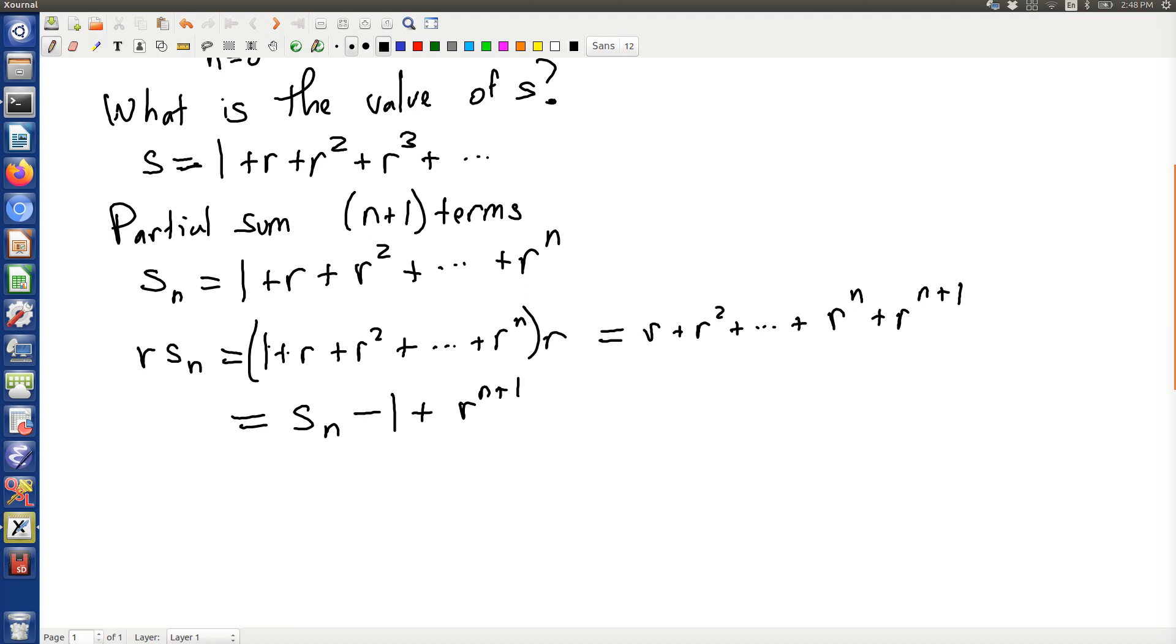We can rearrange and solve for Sn then, which is kind of nice. So we can say Sn bringing one of the terms on the left over to the one on the right. And I'm throwing in an extra minus sign just for fun. Looks a bit like this.